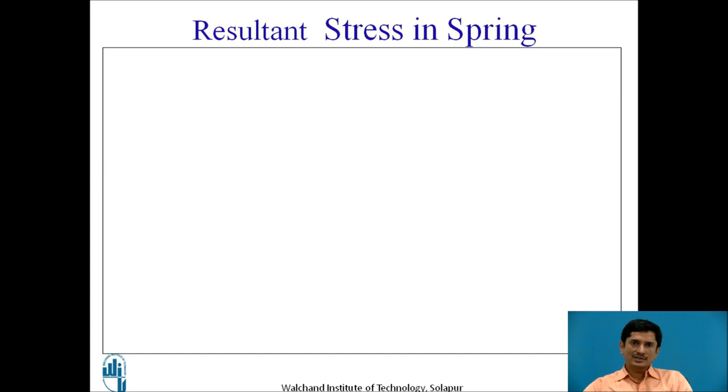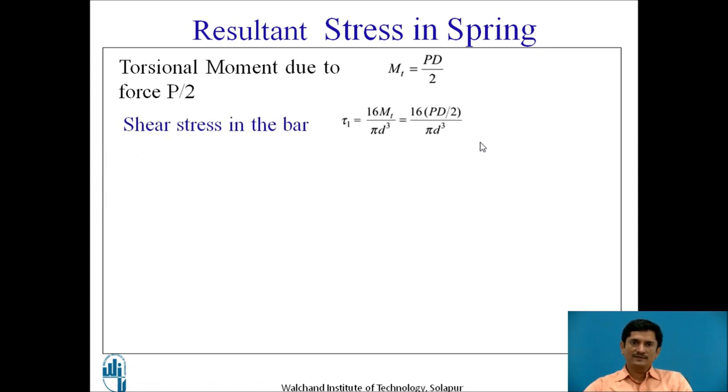Now let us see what are the resultant stresses in the spring. Torsional moment due to the force P by 2. Torque is equal to P into D by 2. The shear stress in the bar is given as tau 1. It is a stress due to torsional shear stress or torsional moment.